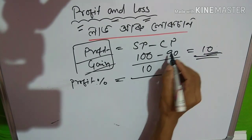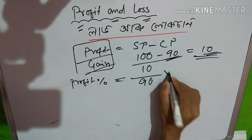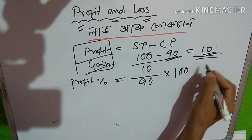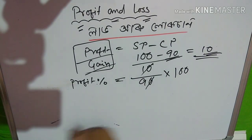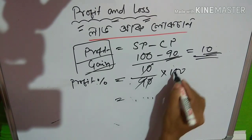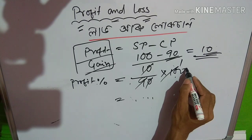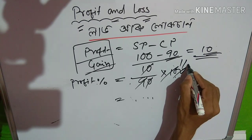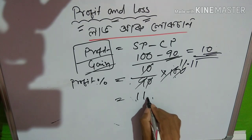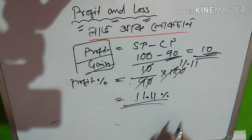This means none of us are close to a profit yet. 1 to 10 and 1 percent profit percentage.